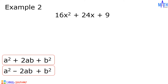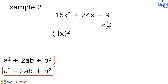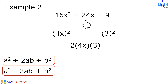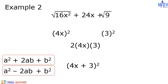Example number 2: let us factor 16x squared plus 24x plus 9. It must be of the form a squared plus 2ab plus b squared. Since 16x squared can be written as the square of 4x, and 9 can be written as the square of 3, then 2ab, or 2 times 4x times 3, is equal to 24x. Therefore, 16x squared plus 24x plus 9 is a perfect square trinomial. The square root of 16x squared is 4x, the square root of 9 is 3, so we have the square of 4x plus 3.